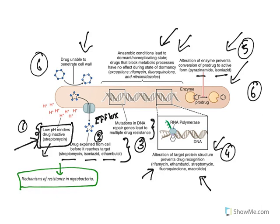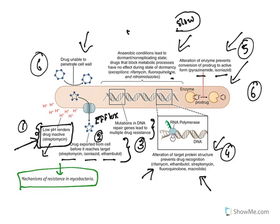The organism has developed six various ways of resistance. Drugs that block metabolic processes have no effect during dormancy. The TB organism is mostly non-replicating and divides very slowly. Because it is a slow replicator, rifampicin, fluoroquinolones, and similar drugs cannot act effectively on it.